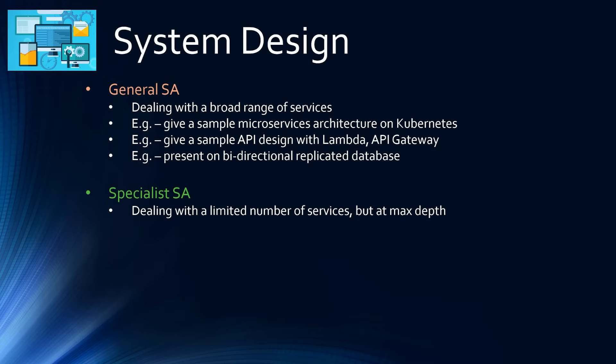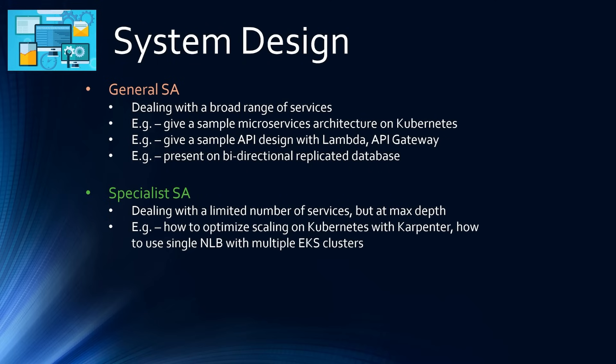The service teams are basically the software developers coding the services on the cloud, and their time is very, very valuable, so we want to bother them as little as possible. For the Kubernetes example, where the general SA gave the design and general direction on scaling, a customer might then ask how to optimize it if the cluster autoscaler is too slow. A specialist SA should be able to explain how to optimize scaling on Kubernetes using the newly released Karpenter, or what parameters in the older cluster autoscaler can be tuned to make scaling faster. A specialist SA would also know how to use a single network load balancer with multiple Kubernetes clusters rather than a separate load balancer for each.